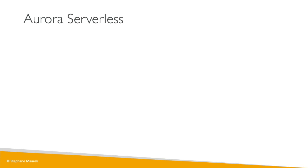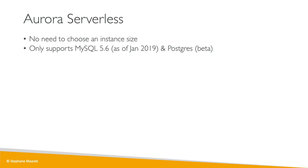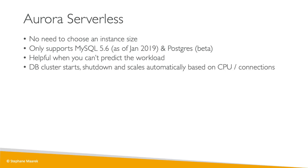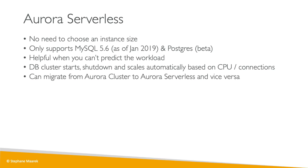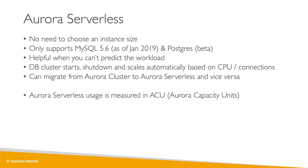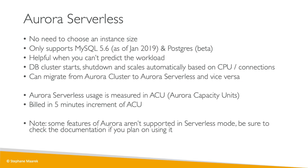There is also Aurora Serverless, where you don't need to choose an instance size at all — it auto-scales for you. It currently supports MySQL 5.6 and Postgres (still in beta as of January 2019). It's helpful when you can't predict your workload or expect huge workload peaks. The DB cluster will start, shut down, and scale automatically based on CPU and connections. You can migrate between a standard cluster and serverless and vice versa. Aurora Serverless uses Aurora Capacity Units (ACU), similar to DynamoDB capacity units, and you're billed in 5-minute increments. Some Aurora features are not supported in Serverless, so check the documentation.